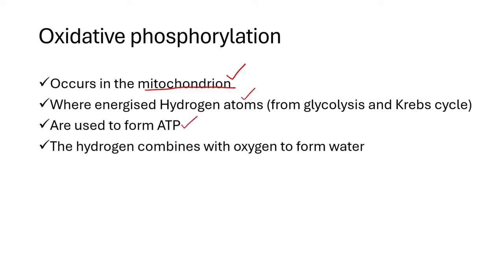In animals, anaerobic respiration is known as lactic acid fermentation. Whenever you see the term lactic acid fermentation, they are referring to anaerobic respiration in animals — the one that does not require oxygen. In animals, anaerobic respiration occurs in the muscles. If they ask what is the site for lactic acid fermentation, you say muscles. It usually occurs during exercise.